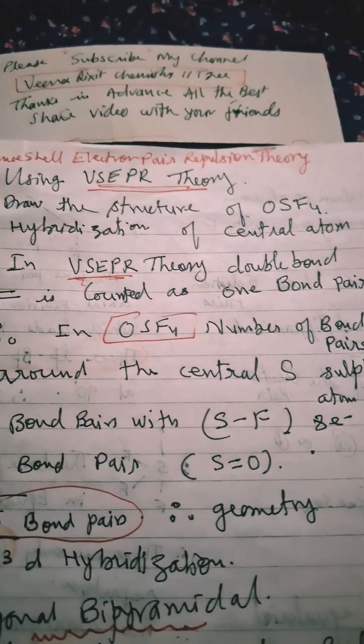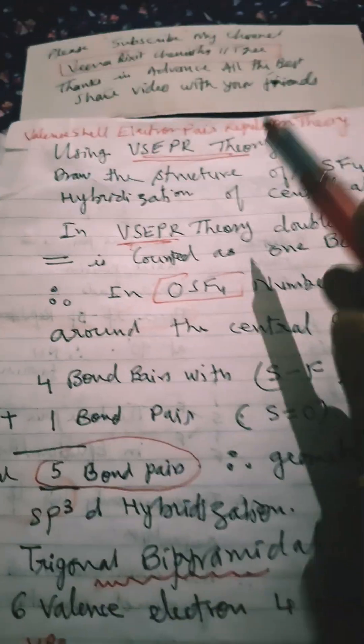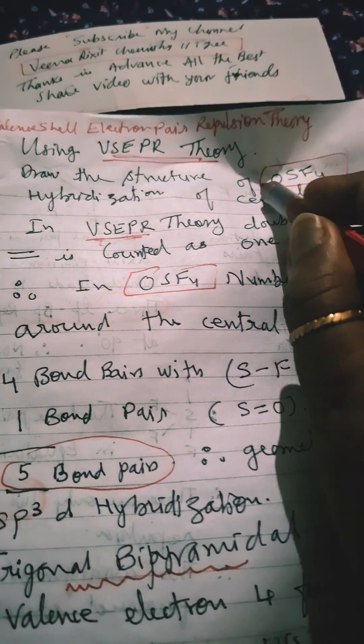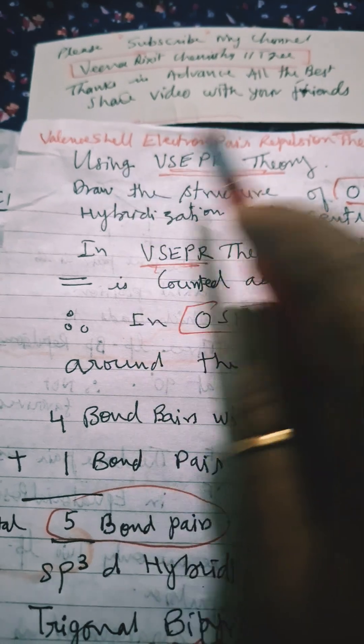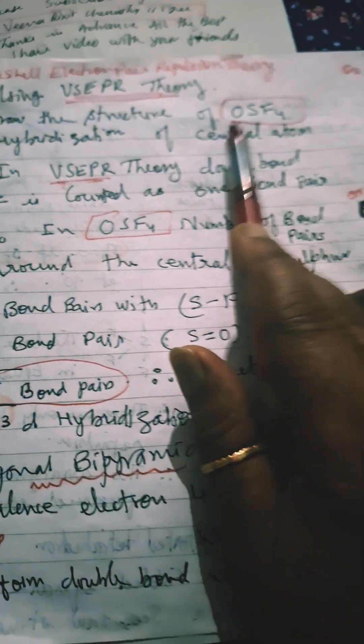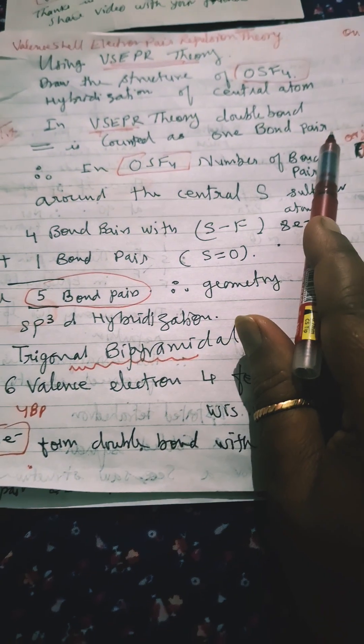Please subscribe my channel if you like my video. We are doing here structure of OSF4 in accordance with valence shell electron pair repulsion theory. Prove the structure and draw the structure of OSF4. In VSEPR theory, this is the tip of the day: a double bond is considered to be one bond pair.